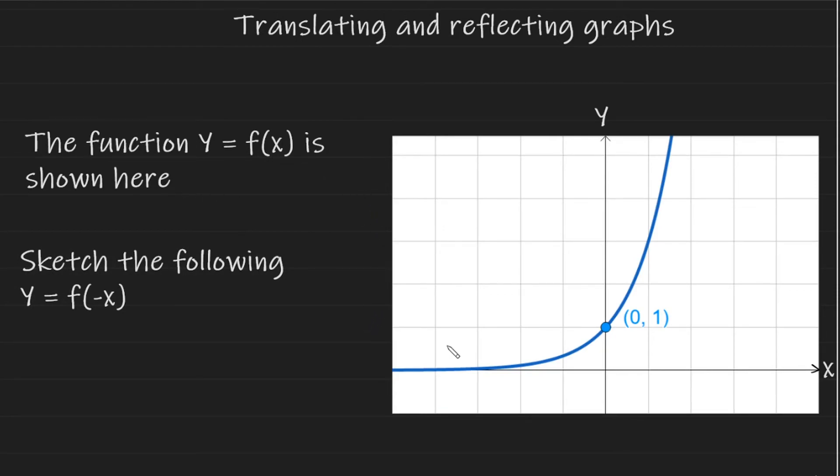Okay, now for this question, the exact same function as before and the graph, but now we are being asked to sketch the following. There is a negative on the inside of the bracket. So therefore, all of my x values that were positive will now be negative and all of my negative x values will now be positive. So we are going to be flipping this graph or reflecting this graph across the y-axis.